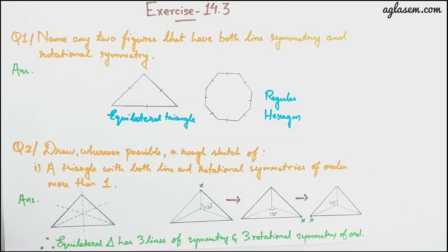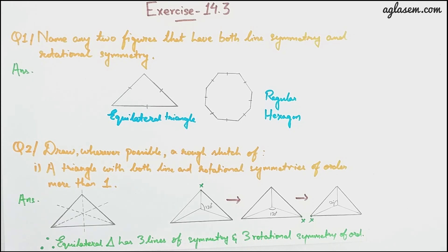Question 1 says: name any two figures that have both line symmetry and rotational symmetry. The answer is an equilateral triangle and a regular hexagon — both have line symmetry as well as rotational symmetry. I have drawn the figures for you, you can have a look at that.